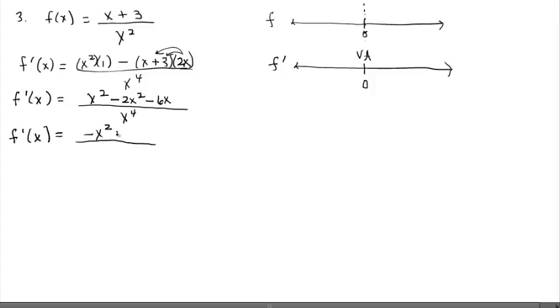Collecting the numerator I have negative x squared minus 6x over x to the fourth. You might see that you can go ahead and divide out an x because x is present in all the terms. So it's probably a good thing to do. Let's go ahead and divide out an x from all terms, so that's going to be negative x minus 6 on top and x cubed on bottom.